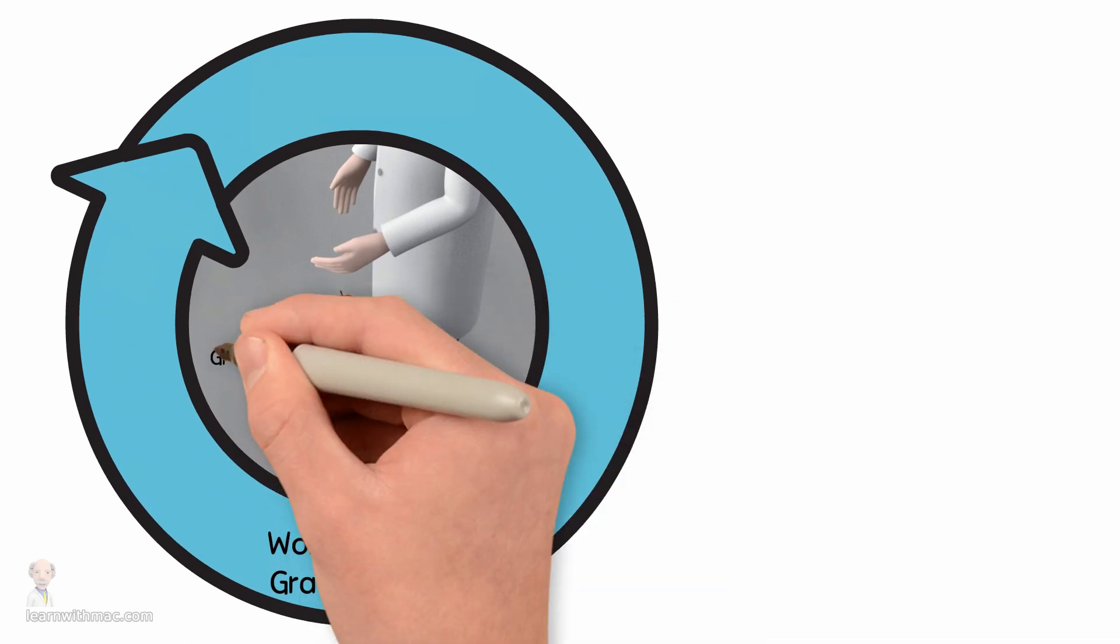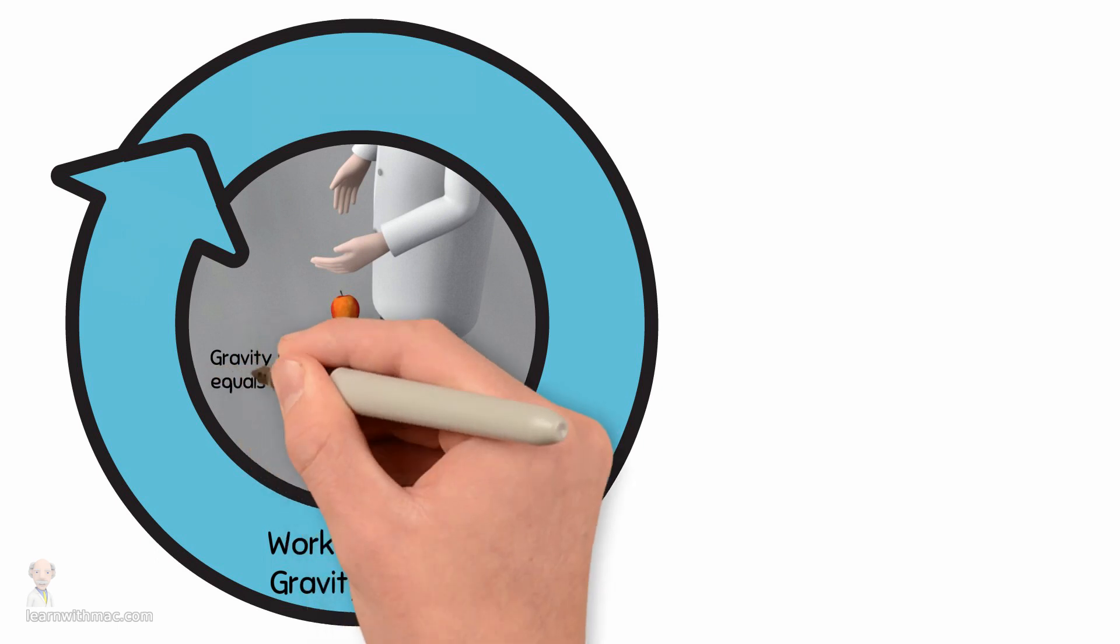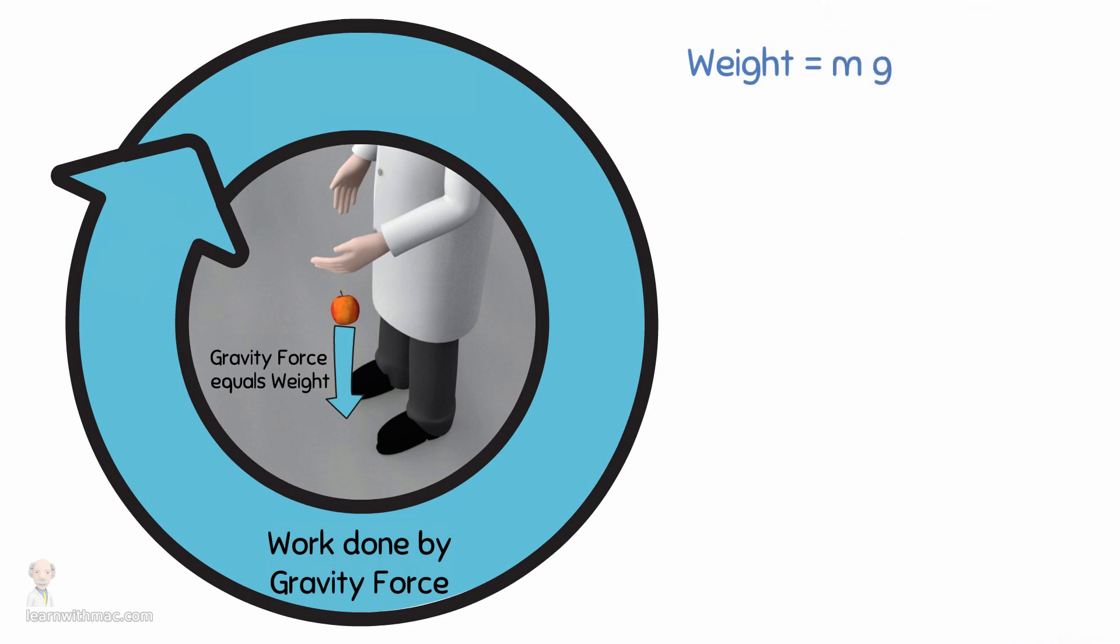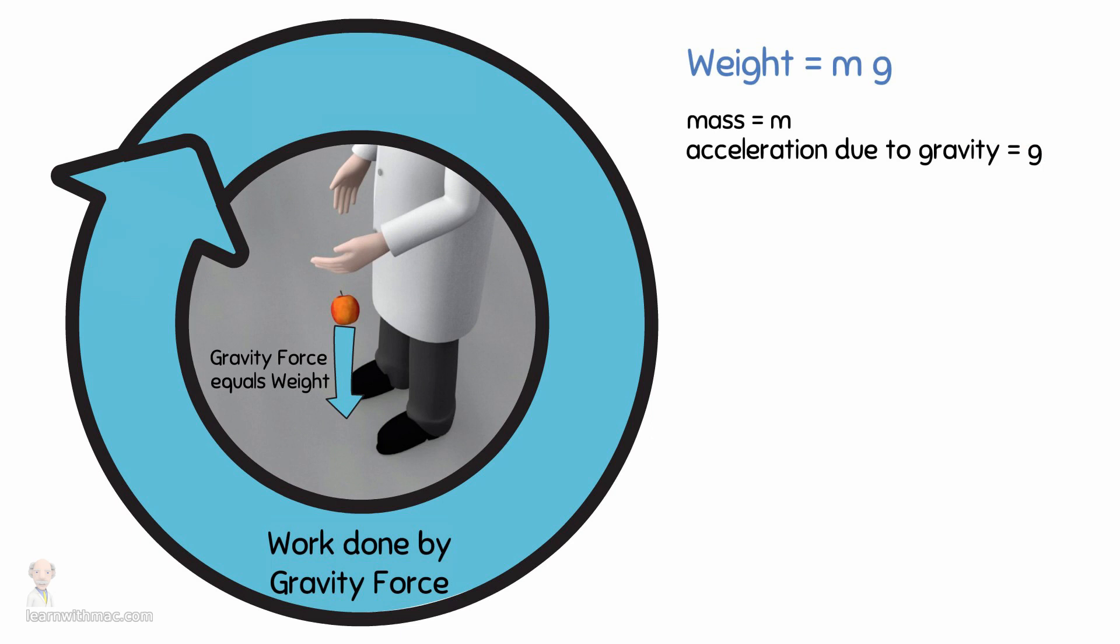As the apple falls it has the force of gravity on it. The force of gravity acting on an object is its weight, which is calculated by multiplying the mass of the apple by the acceleration due to gravity g. In the case of an average sized apple its weight will be approximately one newton of force. Newton is the unit we use to measure the size of a force.